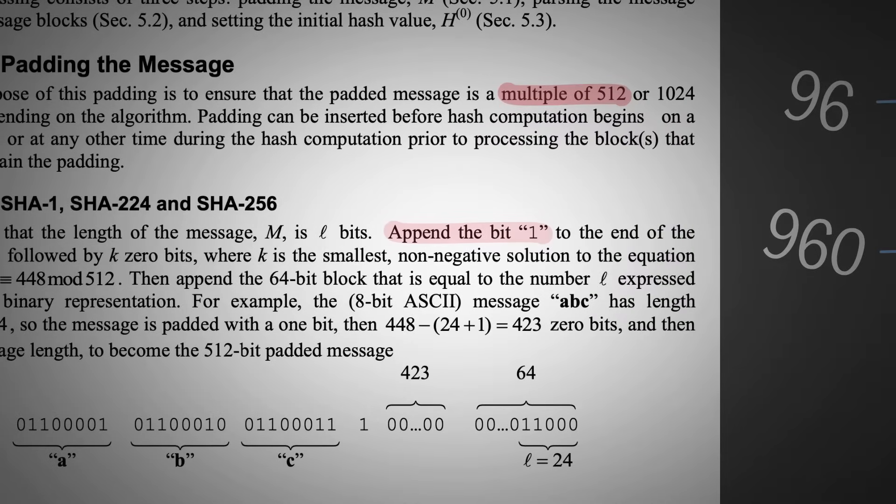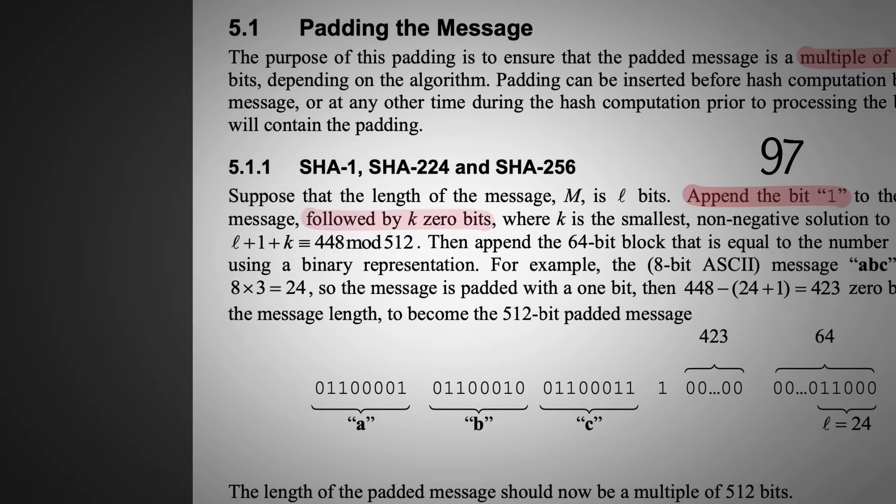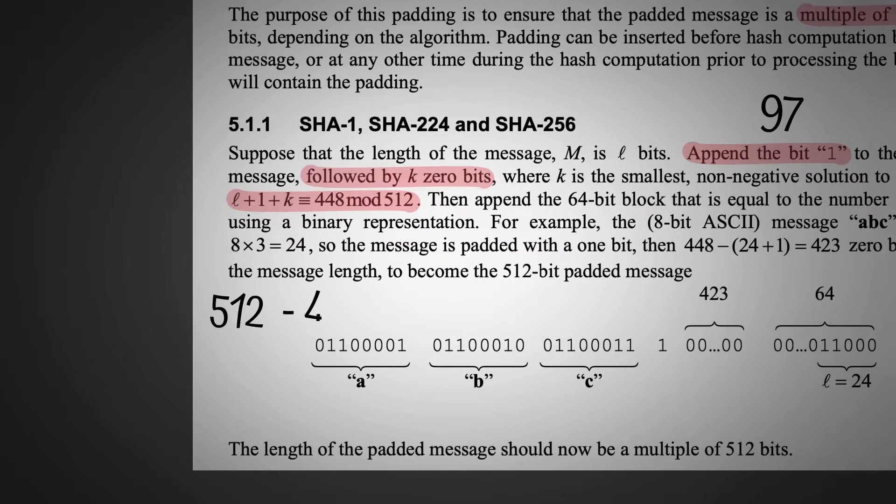First, we're going to append a single 1-bit to our input. That'll take us up to 97 bits. Then we keep adding 0 bits until we get 64 bits away from the nearest multiple of 512. In our case, that's going to be 448.